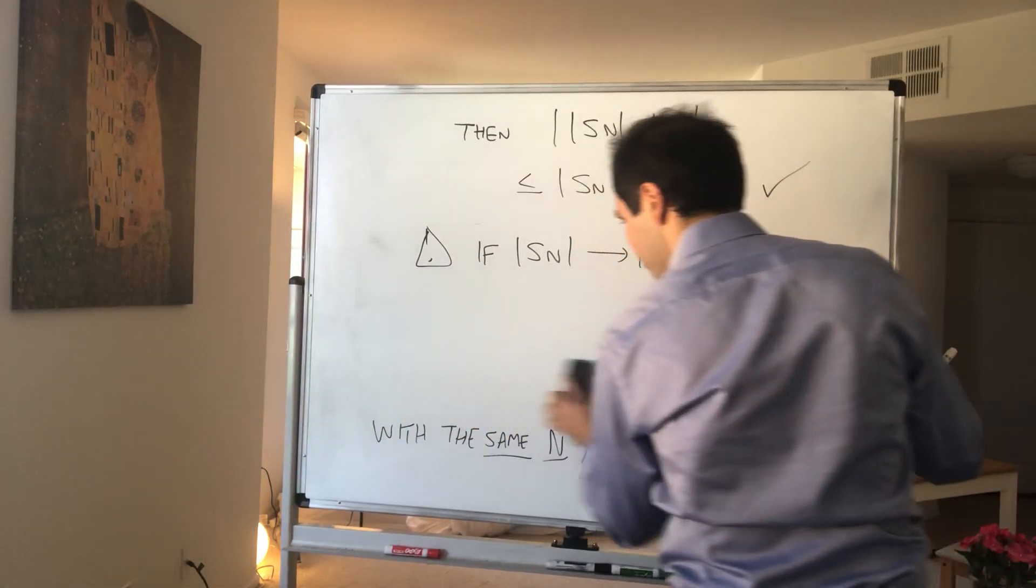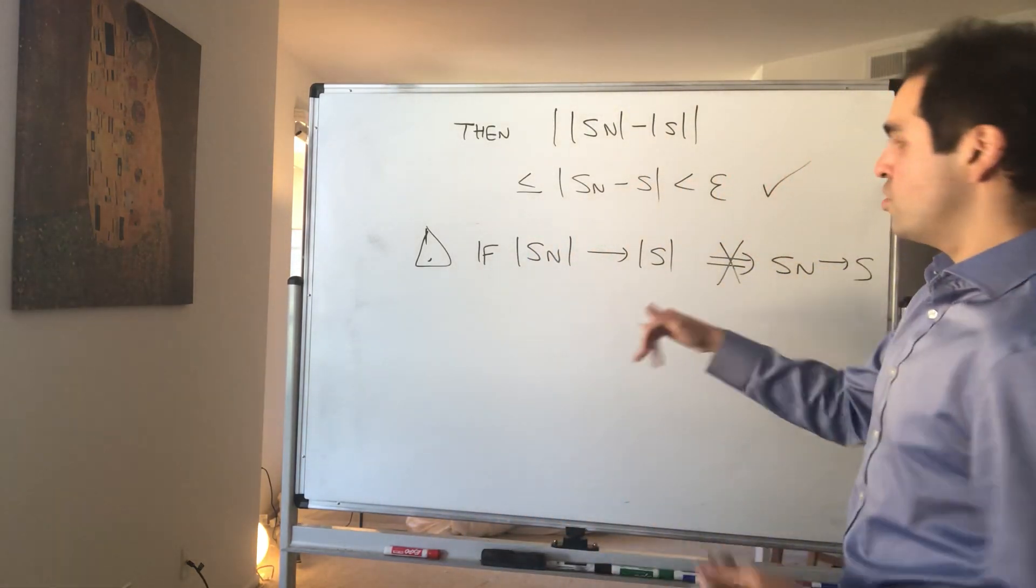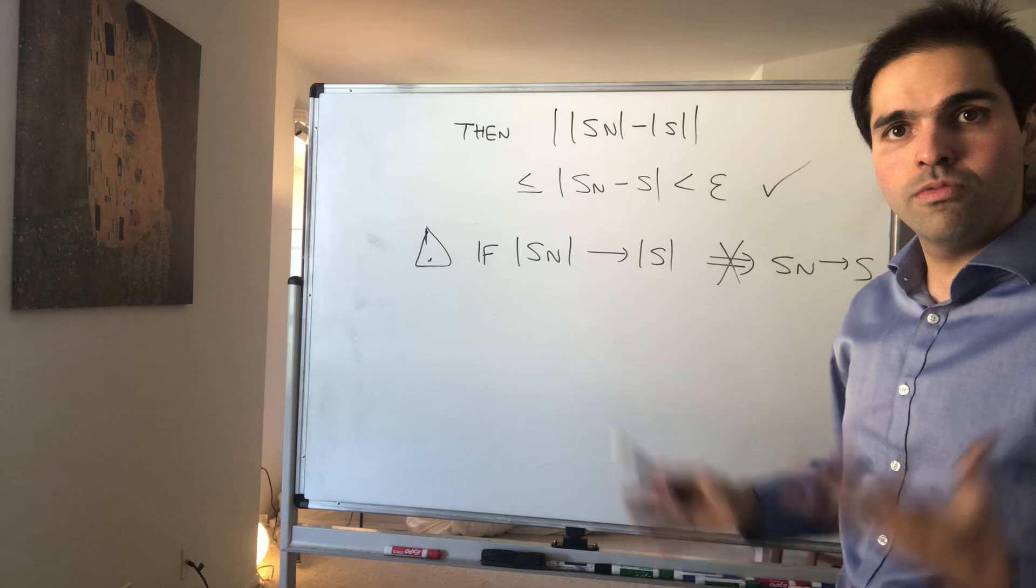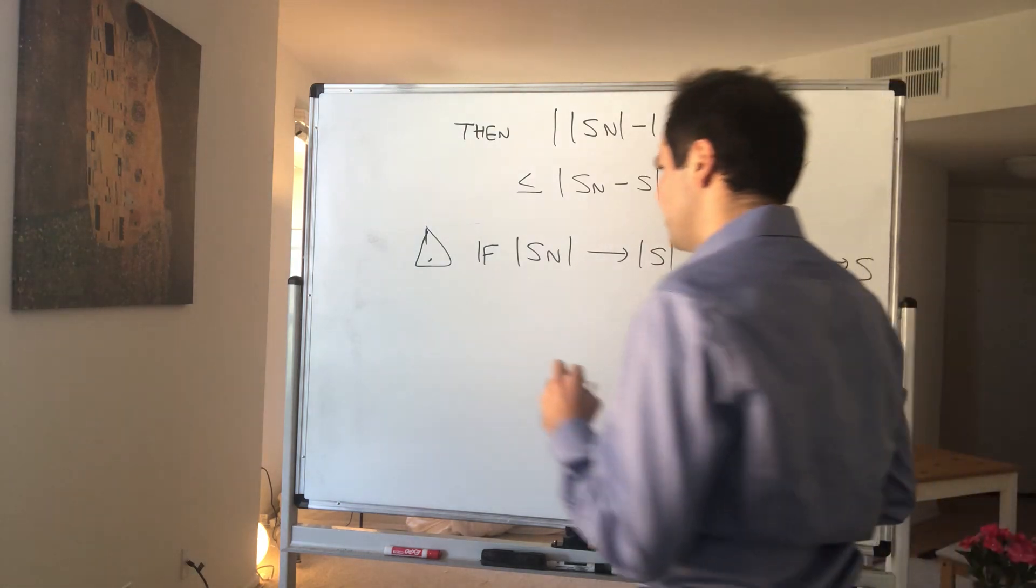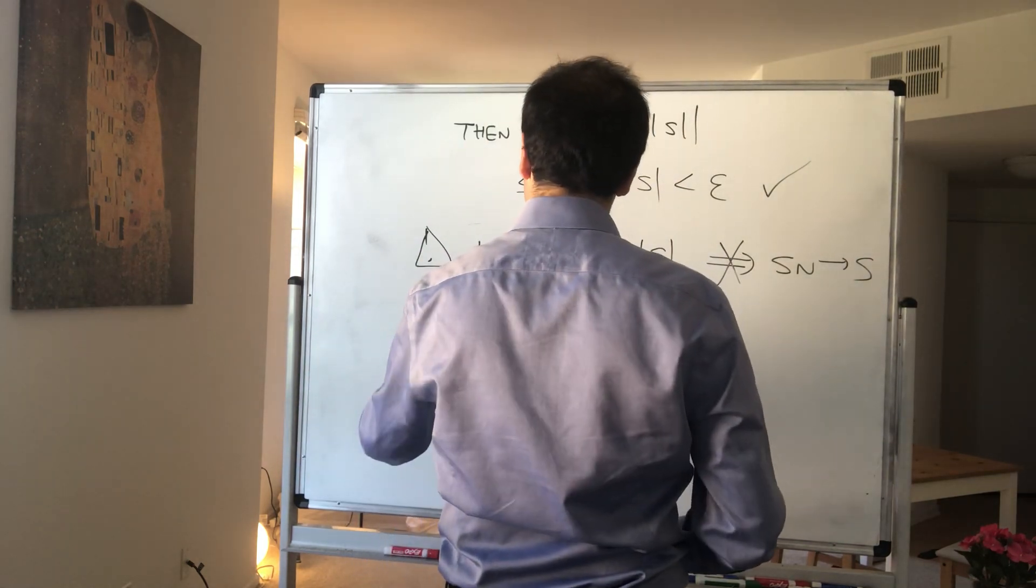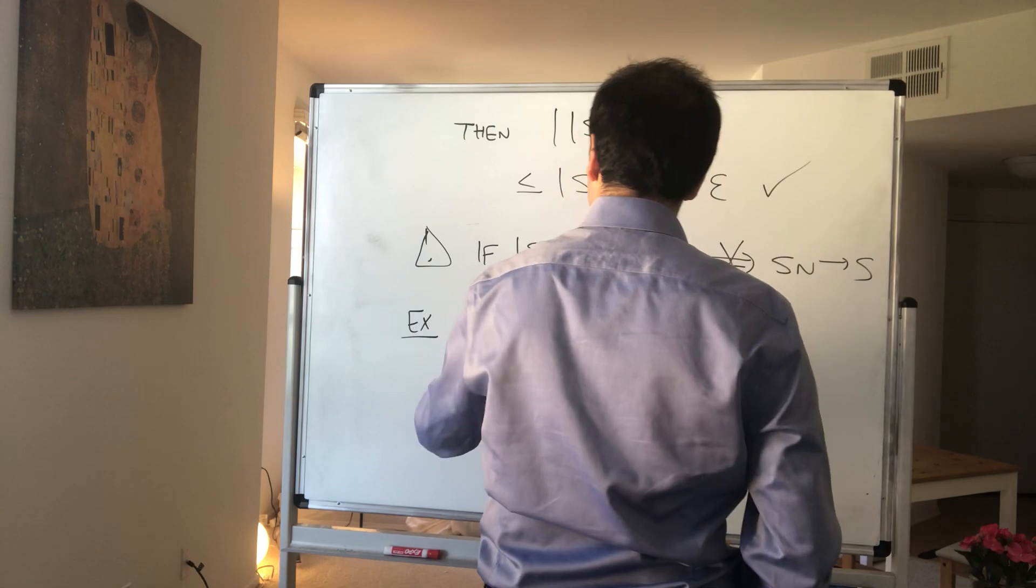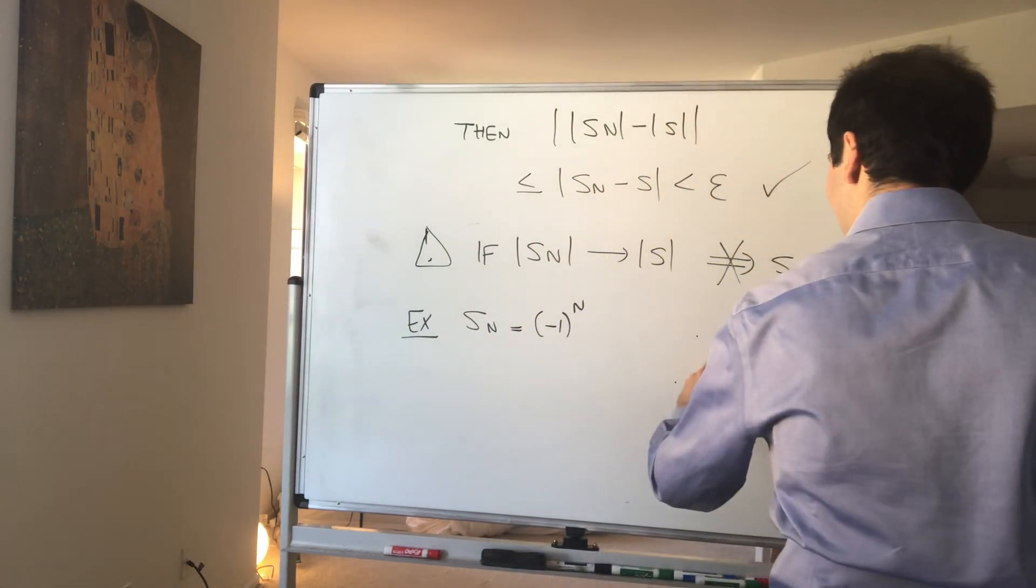For instance, in other words, if the sequence converges then the absolute values converge, but if the absolute values converge, the sequence does not necessarily converge. For instance, take s_n to be, again, our favorite counterexample, (-1)^n, so it just jumps back and forth.